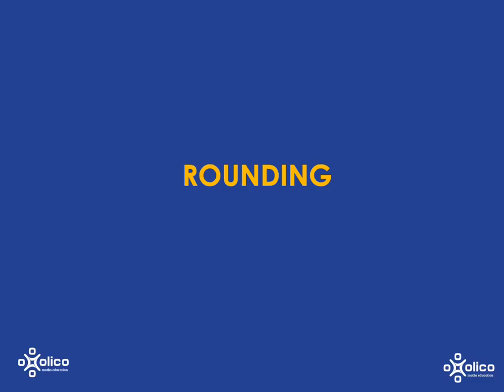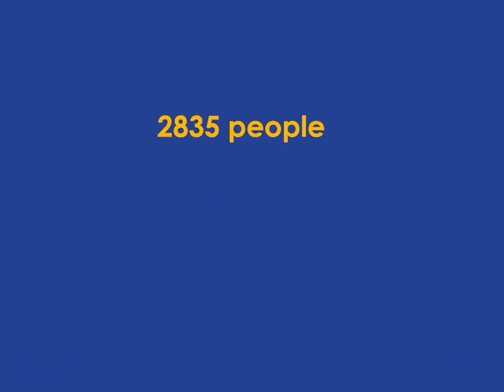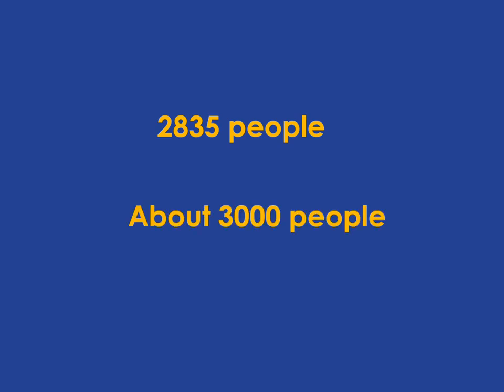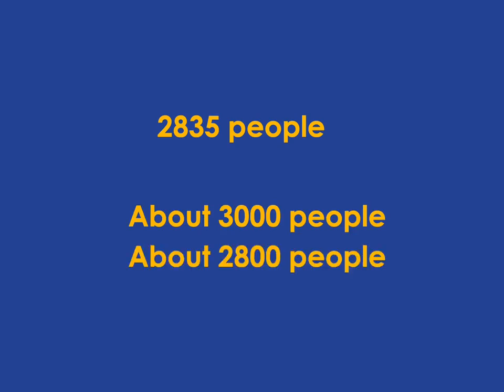We're going to recap rounding with whole numbers. Do you get a picture of what rounding is? If, say for example, we know that there were 2,835 people at a gathering, we might choose to just tell someone there were about 3,000 people at that gathering. If we needed to be a little bit more precise, we might say there were about 2,800 people. That's all rounding is — it allows you to give a more digestible form of the number, and depending on how precise you need to be, you round off to a different place value.